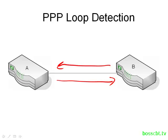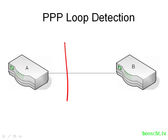But what happens when a loop comes up on a circuit? It changes the communication between the two routers, or rather their ability to communicate. Let's say there is a loop on this particular circuit. Router B will transmit a frame across the circuit; however, it never reaches router A. Rather, it's looped back towards router B.